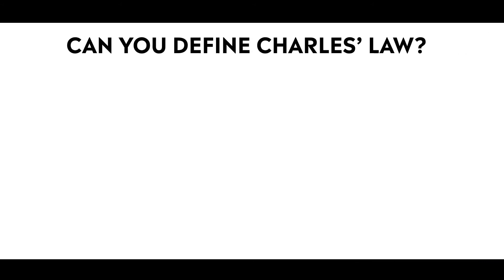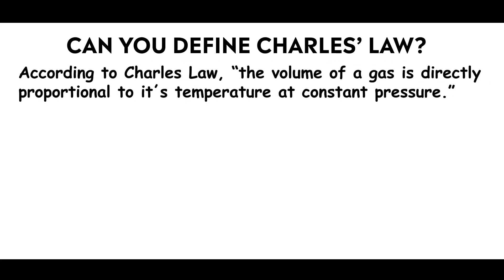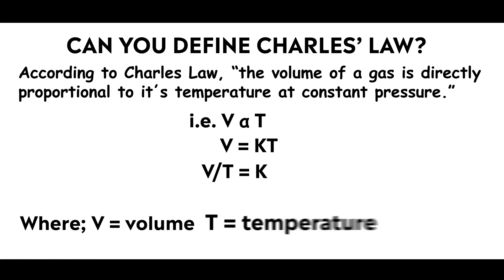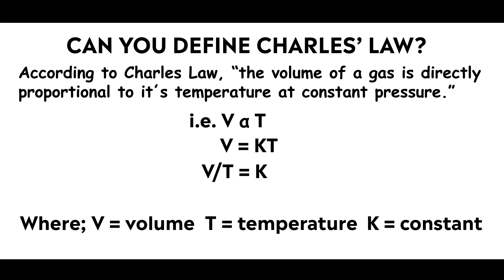The relationship of volume and temperature of a gas is directly proportional at constant pressure. According to Charles' Law, the volume of a gas is directly proportional to its temperature at constant pressure. That is, V is directly proportional to T. Converting to an equation: V = KT, or V divided by T equals K, where V is volume, T is temperature, and K is the gas constant.